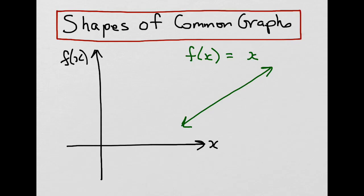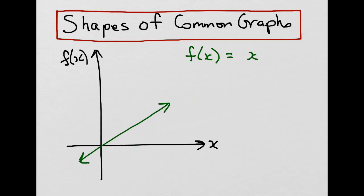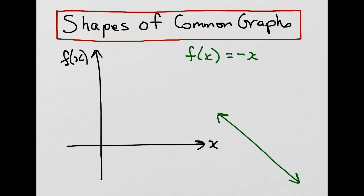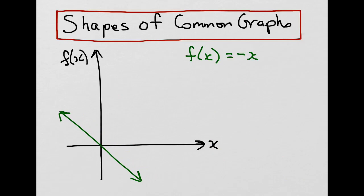On the graph, this line will go through the origin and be positively sloped up to the right. If we change the function to negative x instead of positive x, what it does is change the slope from positive to negative. So it still goes through the origin, but it has a negative slope instead of a positive slope.